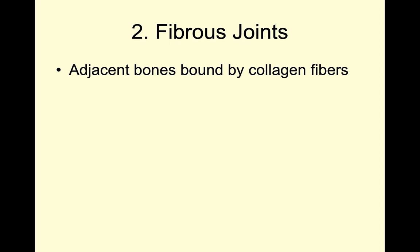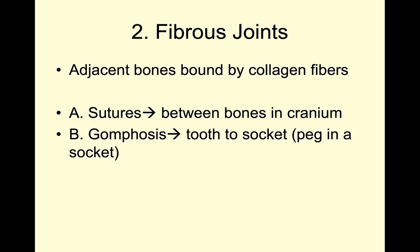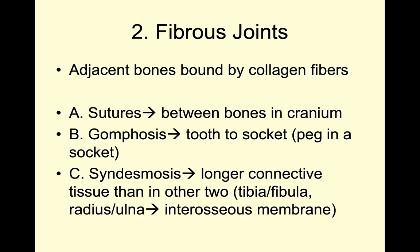Onto our fibrous joints. Fibrous joints are holding adjacent bones together with collagen fibers. Our first type of fibrous joints are sutures, and these can be found between the bones of our cranium. A gomphosis is where we're holding a tooth into the socket. And last is our syndesmosis — we have longer connective tissue than we see in our sutures and our gomphosis, and this joint is holding together our tibia with our fibula or our radius and our ulna.